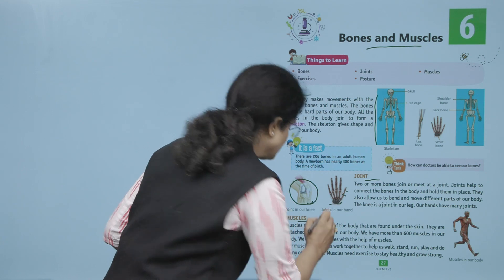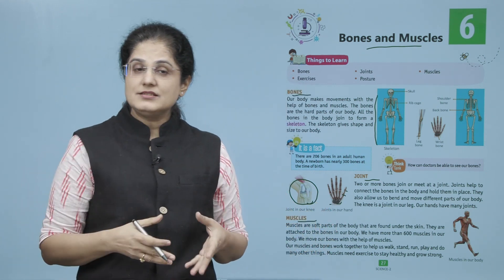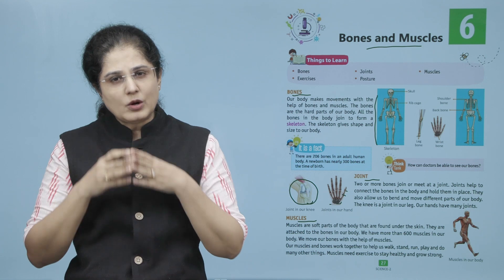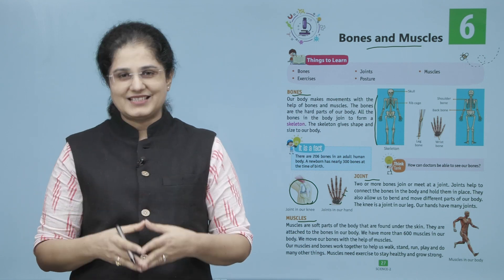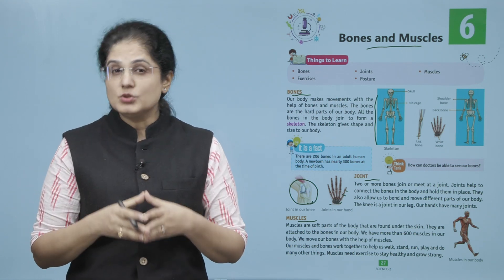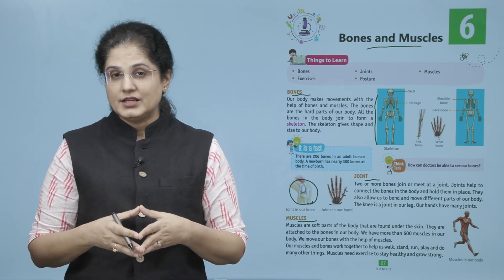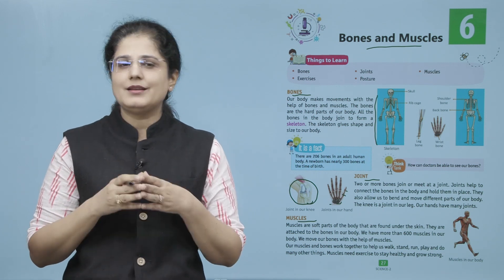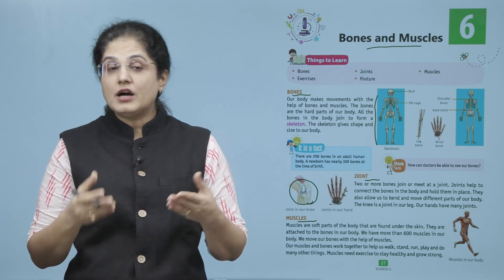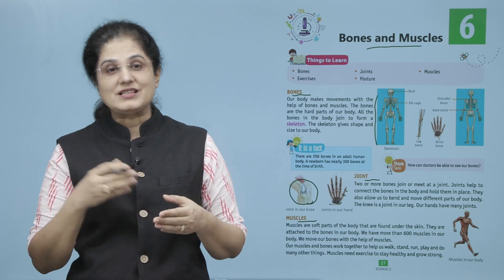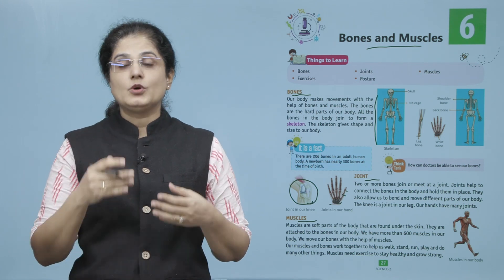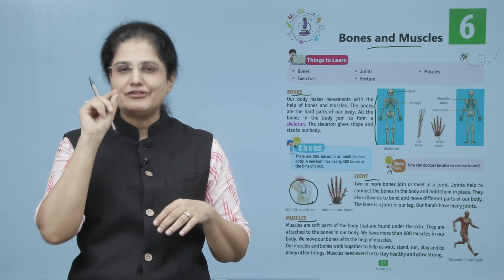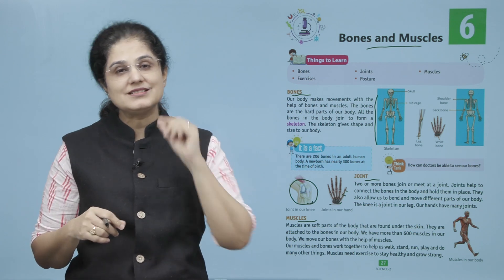Now let us look at the muscles. Muscles are soft parts of the body that are found under the skin. They are attached to the bones in our body. We have more than 600 muscles in our body. We move our bones with the help of muscles.